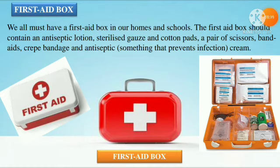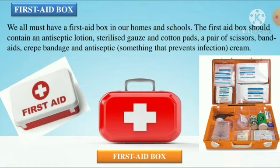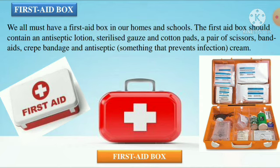Now, the last part of this chapter — the first aid box. We all must have a first aid box in our homes and schools. The first aid box should contain: antiseptic lotion, sterilized gauze and cotton pads, a pair of scissors, bandages, crepe bandage, and antiseptic cream. Antiseptic means something that prevents infection. Injury can occur anytime, so we must always be prepared to treat minor injuries before the doctor's arrival.